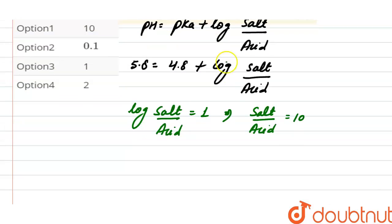So here we can write it as acid divided by salt equals 1 divided by 10, or we can write it as 0.1. And the correct option here will be option 2, the ratio of acid divided by salt.